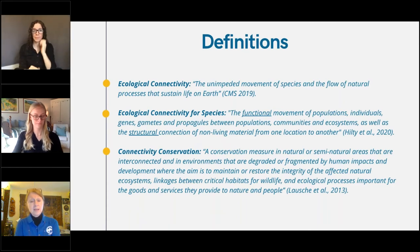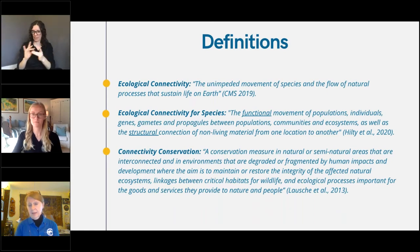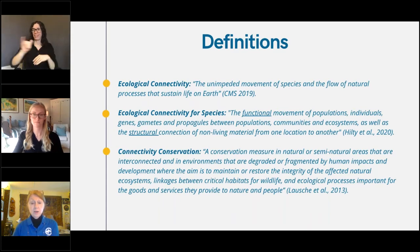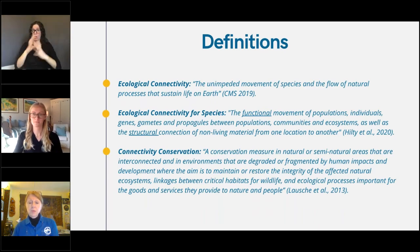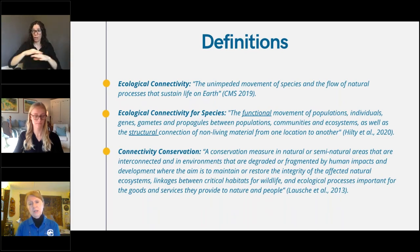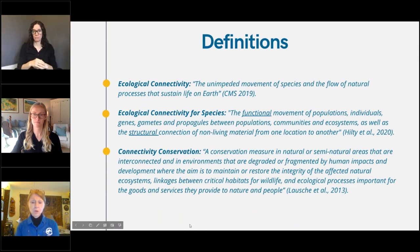Definitions are key — they get us started and give us the foundation. Ecological connectivity is now defined by the guidelines as the unimpeded movement of species and the flow of natural processes that sustain life on earth. Natural processes are ecosystem services and functions. Then if we look at ecological connectivity for species, we have the functional movement of populations, individuals, genes, gametes, and propagules between populations, communities, and ecosystems, as well as the structural connection of non-living material from one location to another.